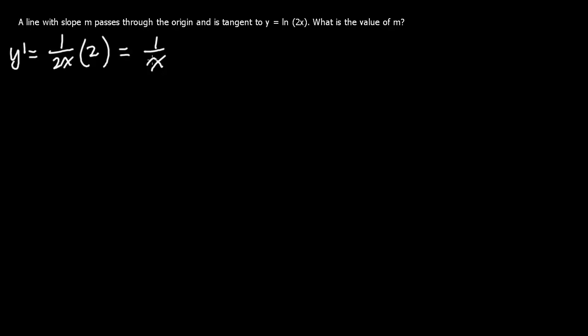Now, this is just your equation anywhere, wherever your x is. However, a line with a slope at m passes through the origin. So the origin is 0, 0. And we need to find another equation that is equal to 1 over x. So m equals y2 minus y1 over x2 over x1.